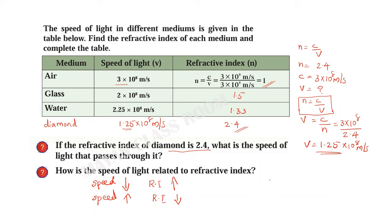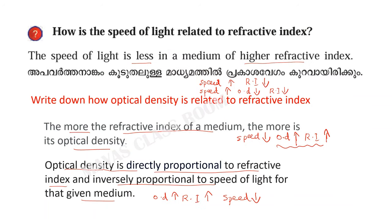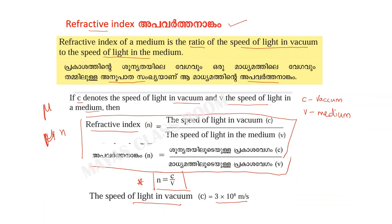The speed of light refractive index is related to optical density, which is directly proportional to the refractive index. If you have any problems with the refractive index or additional questions about this video, please visit the rest of the video. Thank you so much for watching — please comment on the video. Thank you.